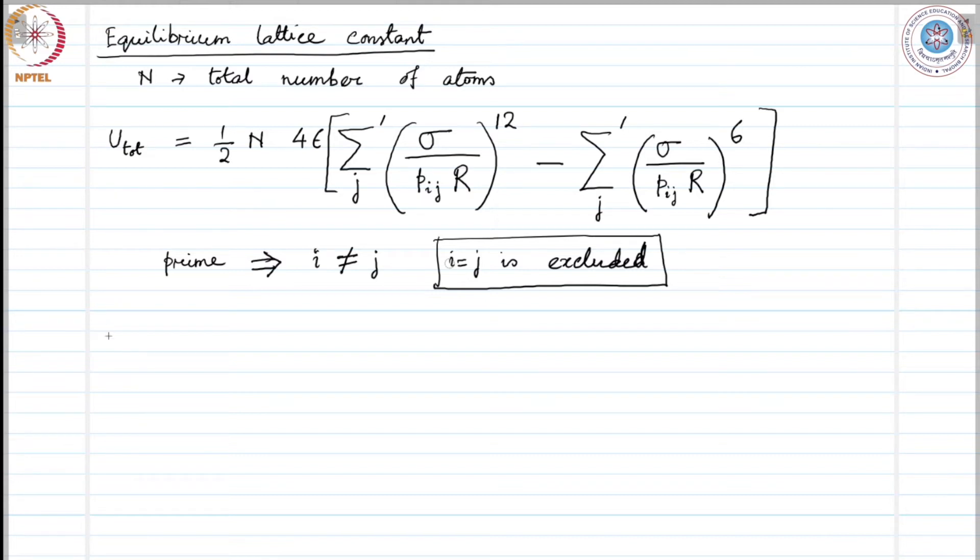Now, let us consider an example. If we consider FCC structure, that is the structure for most of the inert gas crystals. This is the most relevant example. We can calculate sum prime over j Pij to the power minus 12. What is Pij here? Pij times R, where R is the nearest neighbor distance. This gives us the distance between two atoms. Pij is rather a scaling factor.